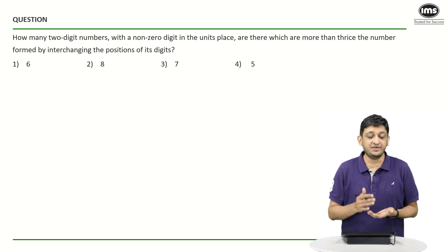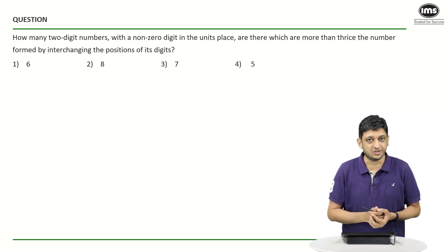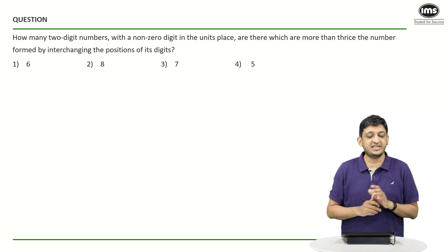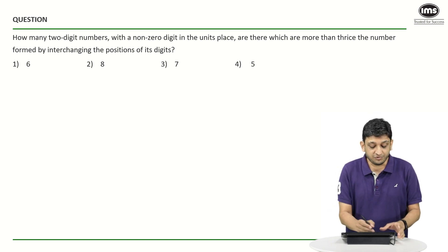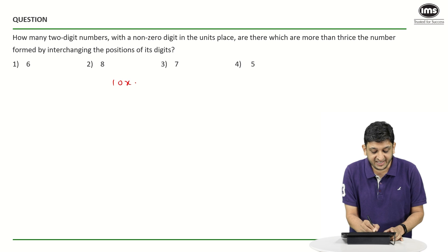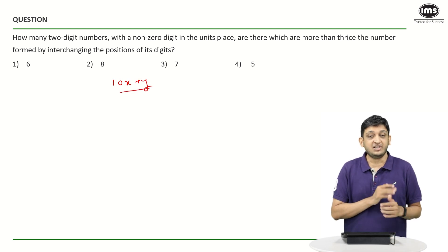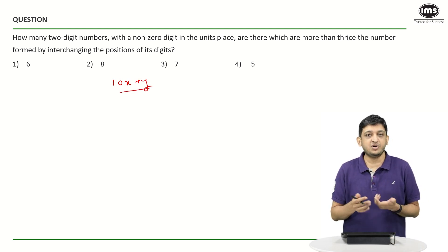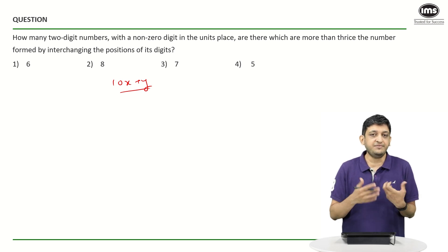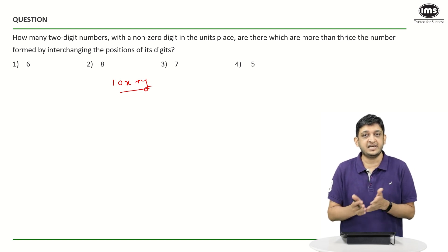Now, this question is fairly straightforward. It's an extremely easy question if you know how to construct these numbers. Whenever someone tells you that there is a two-digit number, you have to represent it in the form of 10X plus Y. You cannot write it simply as XY purely because XY has multiple notations. XY on the face of it seems to be a two-digit number, but XY can also mean multiplication of X and Y.